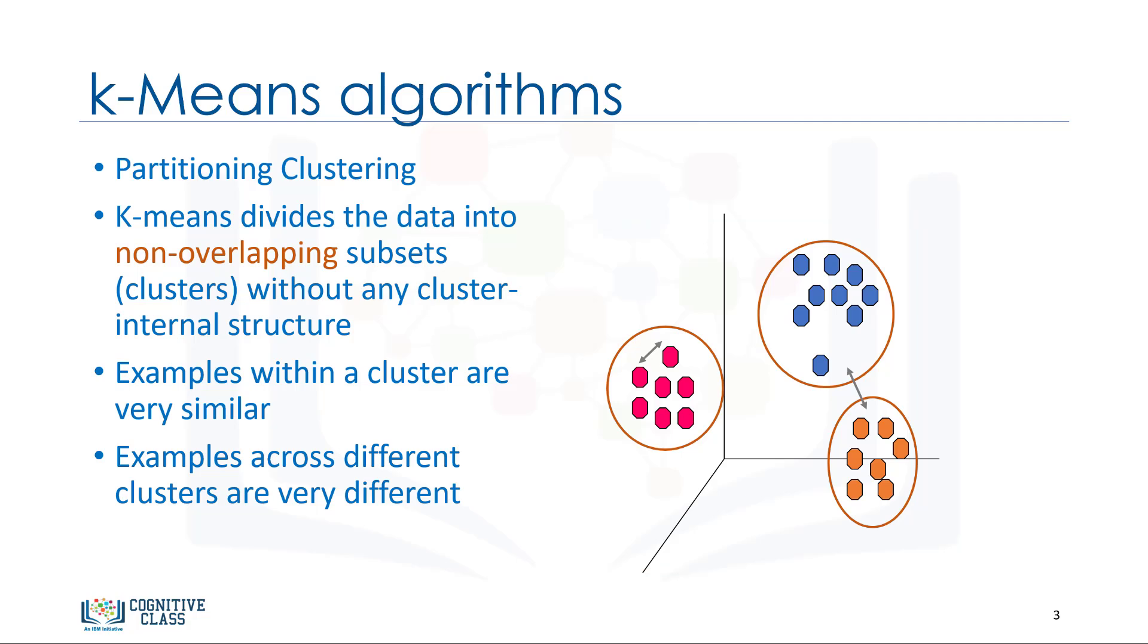As you can see, for using k-means we have to find similar samples, for example, similar customers. Now we face a couple of key questions. First, how can we find the similarity of samples in clustering? And then, how do we measure how similar two customers are with regard to their demographics?